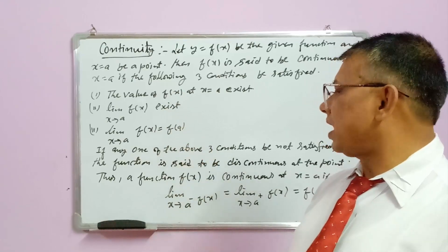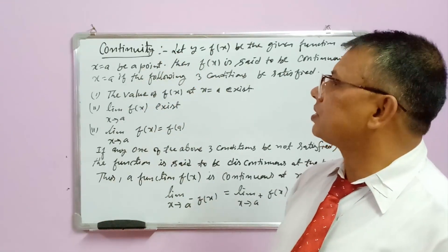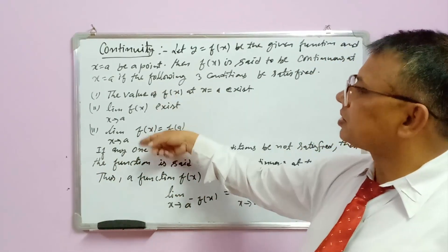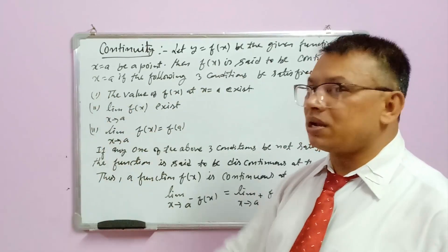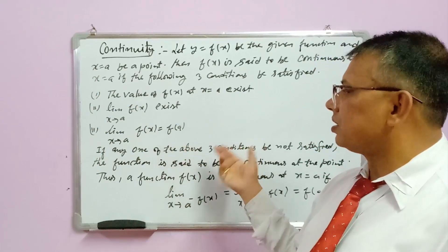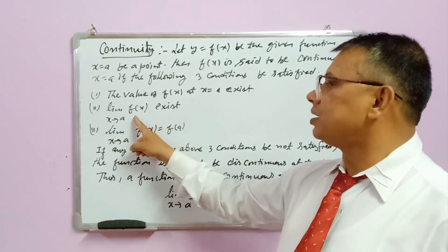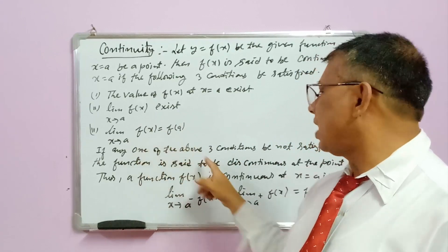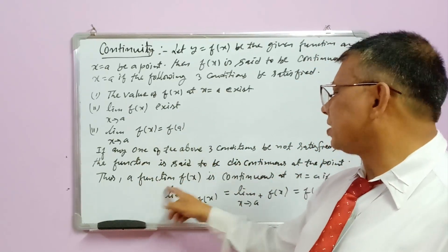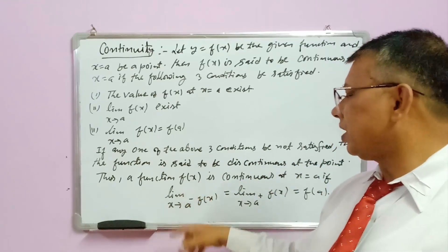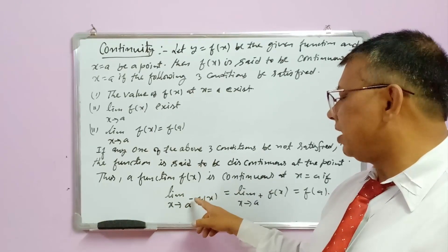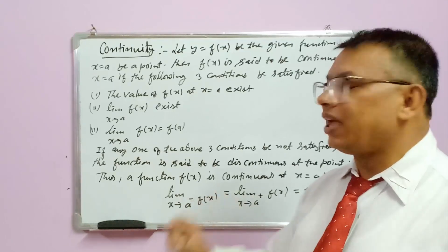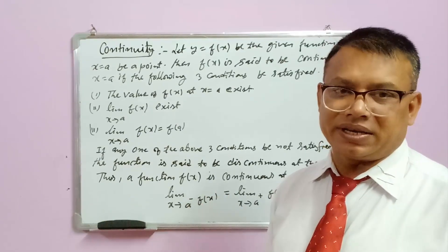If these three conditions are satisfied, then we can say the given function f(x) is continuous. If any one of the above three conditions is not satisfied — whether the first, second, or third — then f(x) will be discontinuous. So f(x) is continuous at x = a if the left-hand limit, right-hand limit as x tends to a, and f(a) are all equal.